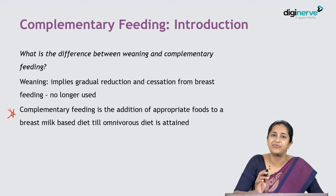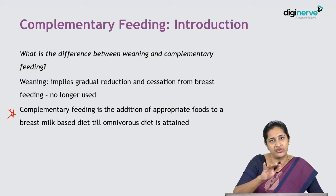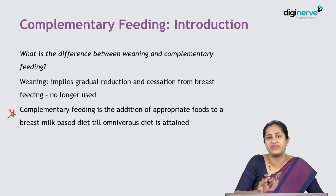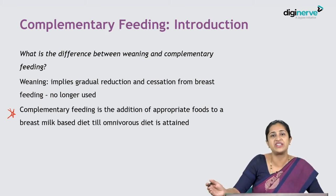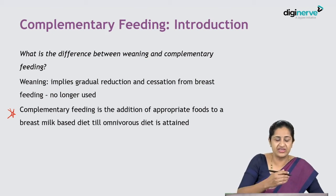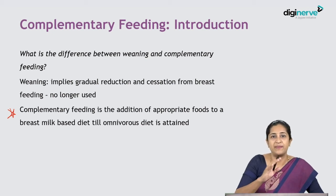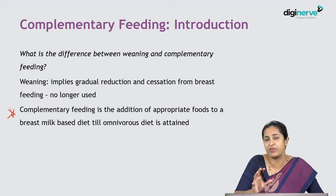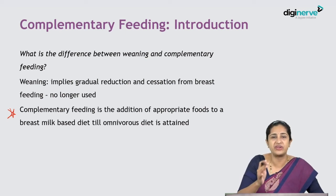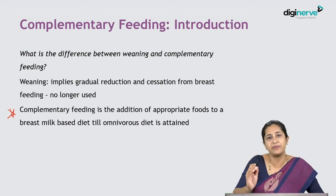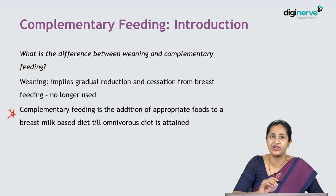The term 'weaning' came from weaning off from the breast, meaning breastfeeding should reduce and the baby should start eating solid feeds. However, the term weaning itself means cessation and stop, which is why it's no longer used. Breastfeeding is still a very important part of the infant's diet from six months to one year of age. Complementary feeding is about complementing breastfeeding to attain a complete normal solid food diet.